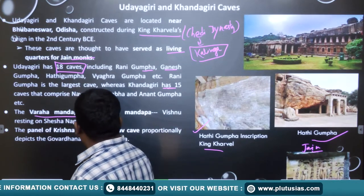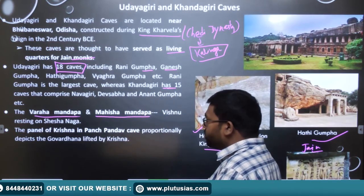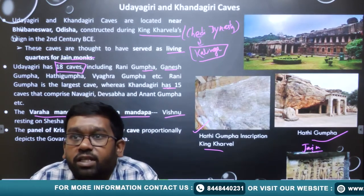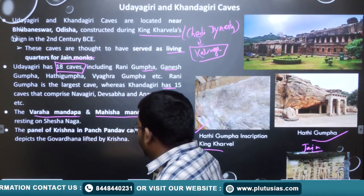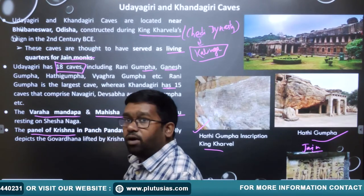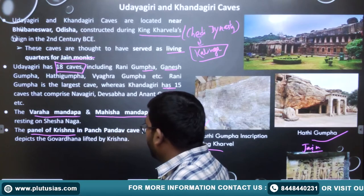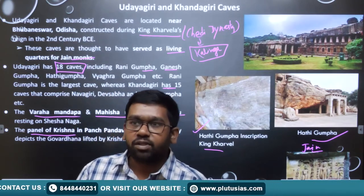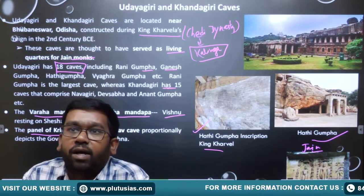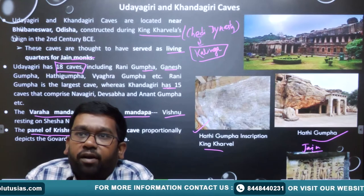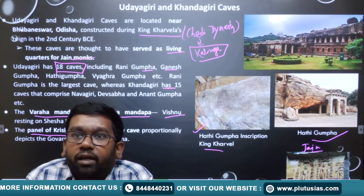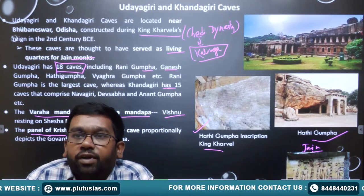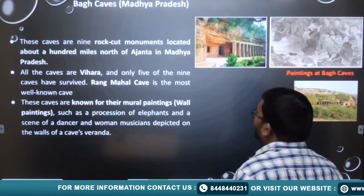Udayagiri also has a Varaha Mandap and Maisama Mandap. Statues of Vishnu resting upon Sheshanaga are found in this cave. A panel of Krishna is also shown — depicting him lifting Govardhan Parvat, which is in Mathura. So Udayagiri and Khandagiri together have 18 plus 15, a total of 33 caves, situated in Odisha.